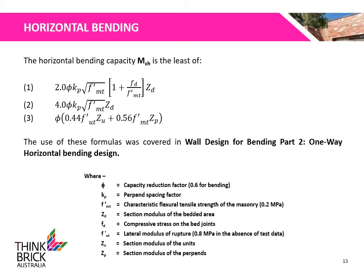The horizontal bending capacity MCH shall be taken as the least of the three equations shown, where phi is the capacity reduction factor, Kp is the perpend spacing factor, FMt is the characteristic flexural tensile strength of the masonry, Zd is the section modulus of the bedded area, Fd is the compressive stress on the bed joints, FUt is the lateral modulus of rupture, Zu is the section modulus of the units, and Zp is the section modulus of the perpends.